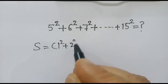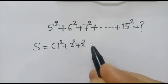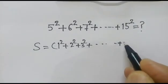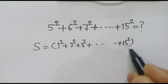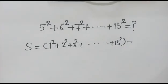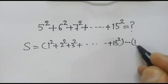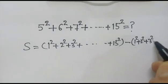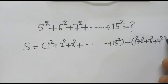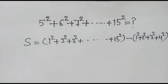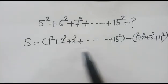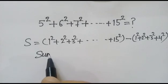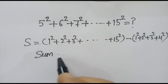Then we subtract 1 squared plus 2 squared plus 3 squared plus 4 squared. We can write this series as this one.